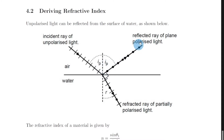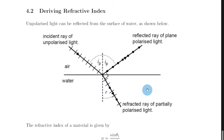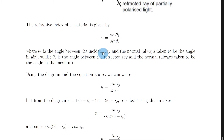When the reflected light is fully plane polarized, the reflected ray makes an angle of 90 degrees to the refracted ray. And because this is the refracted ray, this is going to be my angle of refraction, little r, inside the water. Now, remember back to higher physics where we saw an expression for the refractive index of a material: n equals sine theta 1 over sine theta 2, where theta 1 is the angle between the incident ray and the normal — always taken to be the angle in air — whilst theta 2 is the angle between the refracted ray and the normal, always taken to be the angle in the medium.